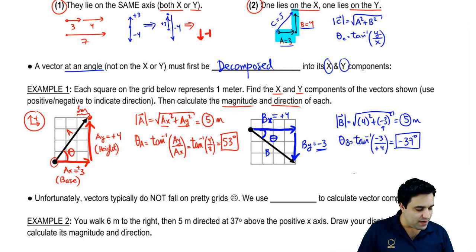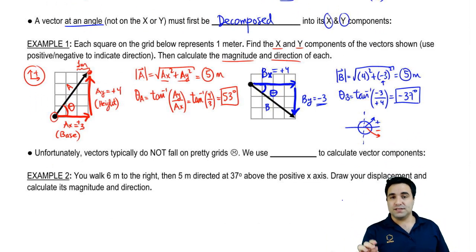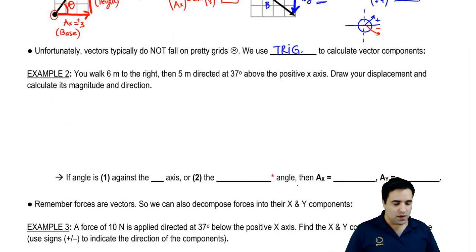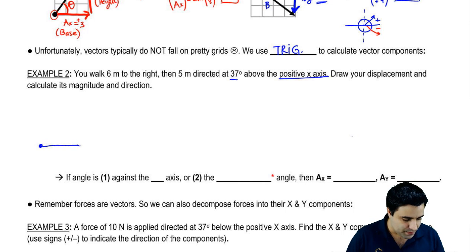And then the angle of theta b here is the arc tangent of y over x. The y value is negative three, and the x value is positive four. Put this in the calculator very carefully, and you're going to get a negative 37. It should make sense to you that this is a negative angle. Remember, an angle over here is a positive angle, and then angles over in this direction are negative angles. So negative here means below the x-axis. The problem is vectors aren't going to fall in this pretty grid, so you can just count them. So instead, we're going to usually use trigonometry to calculate vector components. Let's do one.